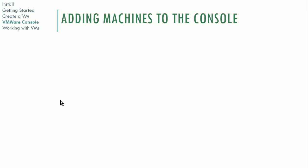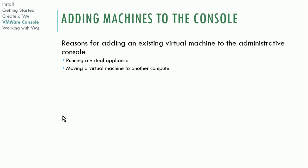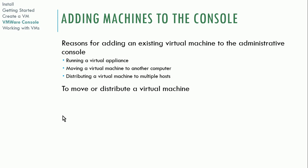Once you're running VMware, one of the first things you might want to do is add a virtual machine to the console, just like in Oracle VirtualBox. You might add an existing machine because you're running a downloaded virtual appliance, moving a VM to another computer, or distributing a VM to multiple hosts. To move a virtual machine, copy the machine files to the new host, point to the folder containing the files, and it will import them.